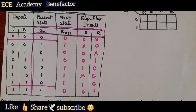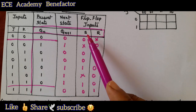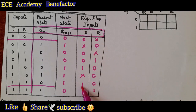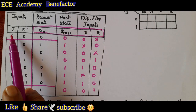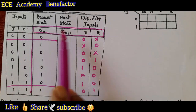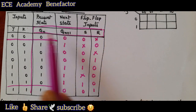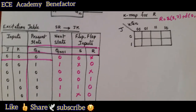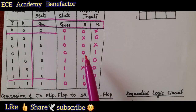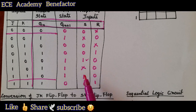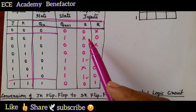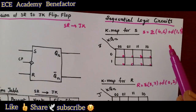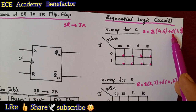After completing the excitation table we need to solve two K-maps, one for S and one for R. For solving the S K-map we draw a three-variable K-map with variables J, K, and Qn. Similarly for R, we draw a three-variable K-map with J, K, and Qn. S is 1 at cells 4 and 6, and is don't care at cells 1 and 5.